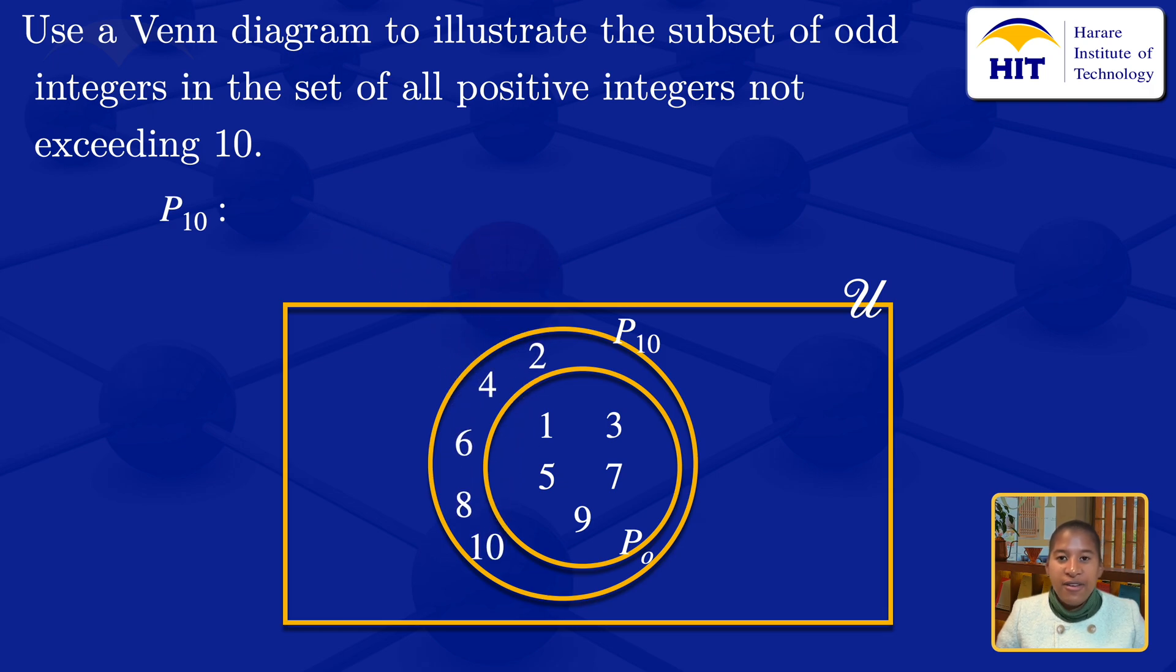So this is the Venn diagram illustrating the subset of odd integers in the set of all positive integers not exceeding 10. Thank you.